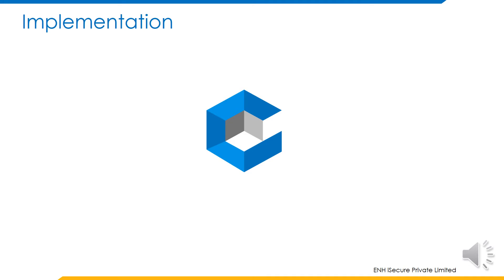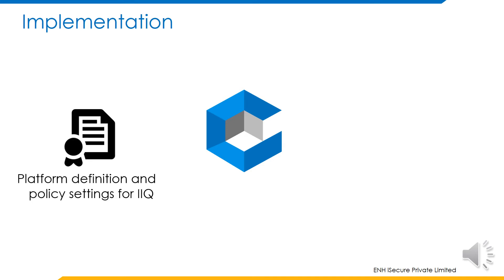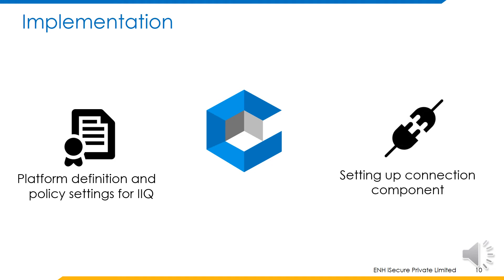We need to perform two configurations on CyberArk to allow it to connect to IdentityIQ and manage the SPAdmin account. First, we need to define a platform. The platform contains details of the type of application CyberArk is connecting to — in this case, IdentityIQ is defined as a website type of platform. The platform also contains how the processes of verification and change of password are carried out, and how often they should be done. Next, we need to set up a connection component, which defines how the privileged session manager will initiate the connection to IdentityIQ.